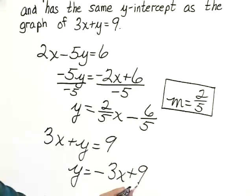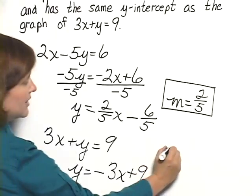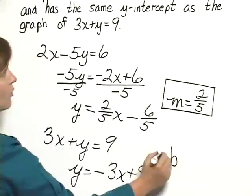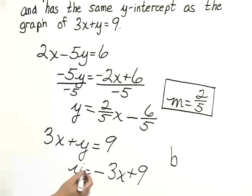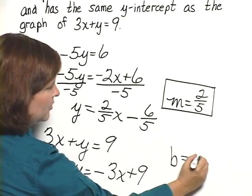The 9 here is the b, and that's the same b that we'll use in the equation we want, since it has the same y-intercept as this line. So we have b equals 9.